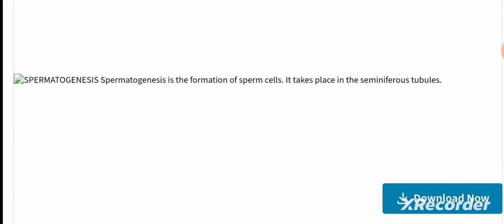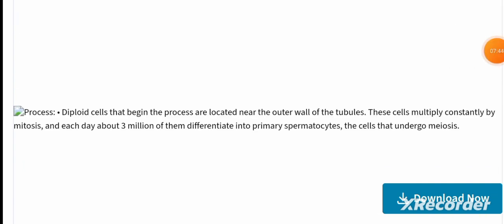Spermatogenesis is the formation of sperm cells, which takes place in the seminiferous tubules. These cells multiply constantly by mitosis, and each day about 3 million of them differentiate into primary spermatocytes, the cells that undergo meiosis.